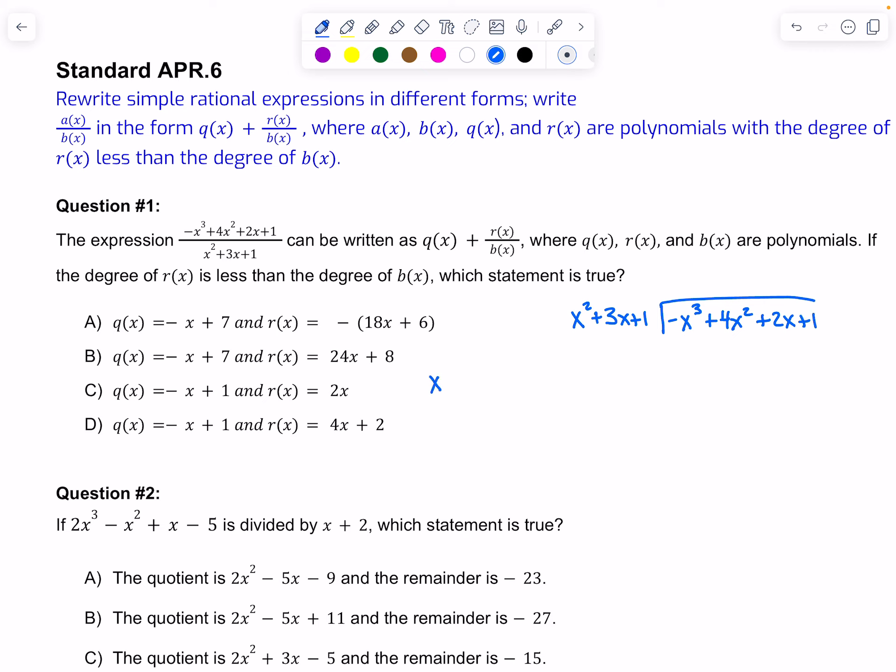First I'm going to figure out what can I multiply x squared by to get negative x cubed? That would be negative x. I'm going to put that at the top and multiply by what's out front. Negative x times x squared gives me negative x cubed. Negative x times 3x is negative 3x squared. And negative x times 1 is negative x.